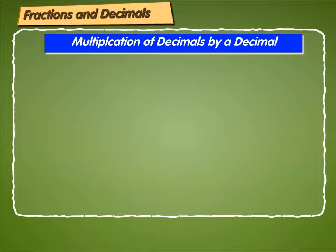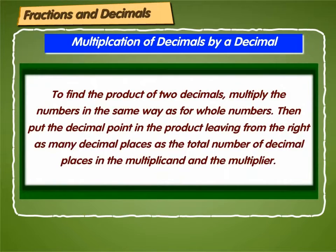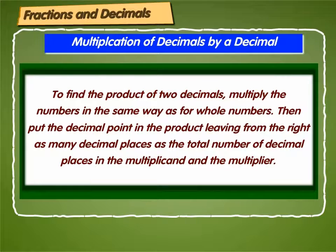To find the product of two decimals, multiply the numbers in the same way as for whole numbers. Then put the decimal point in the product, leaving from the right as many decimal places as the total number of decimal places in the multiplicand and the multiplier.